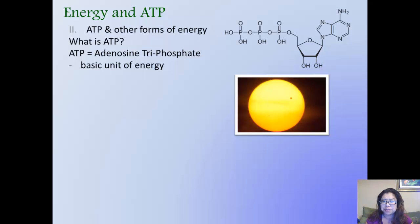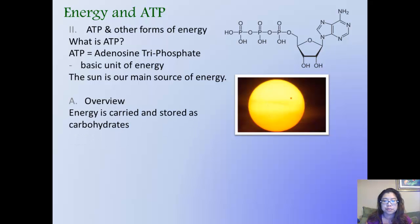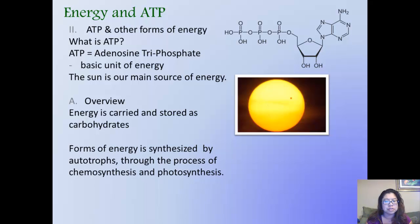As a review, our sun is our main source of energy. Energy is, once we get it from the sun, energy is carried and stored through the form of carbohydrates. Forms of energy is synthesized by autotrophs through the process of chemosynthesis and photosynthesis.